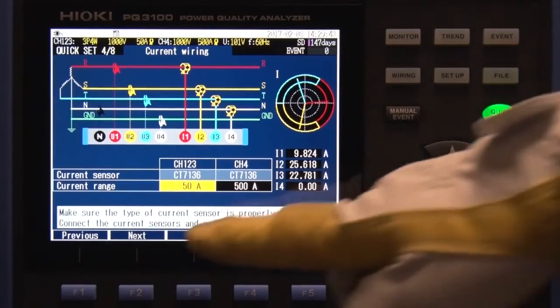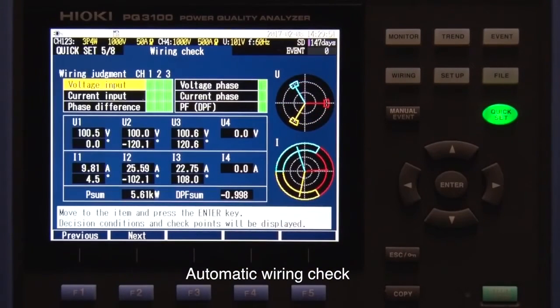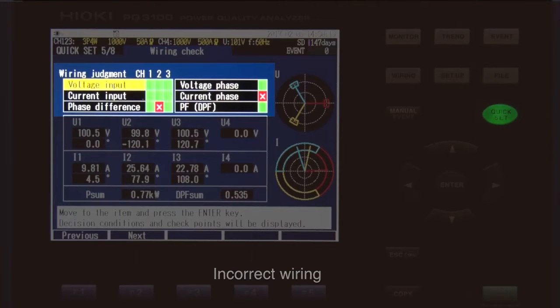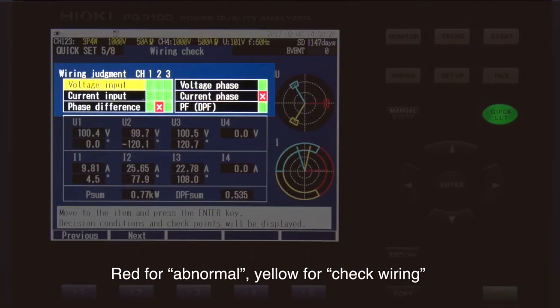The PQ3100 automatically checks for correct wiring and warns you if there is an error. This shows that all connections are correct. Incorrect wiring is indicated in red. Yellow signals that you should double-check the wiring.